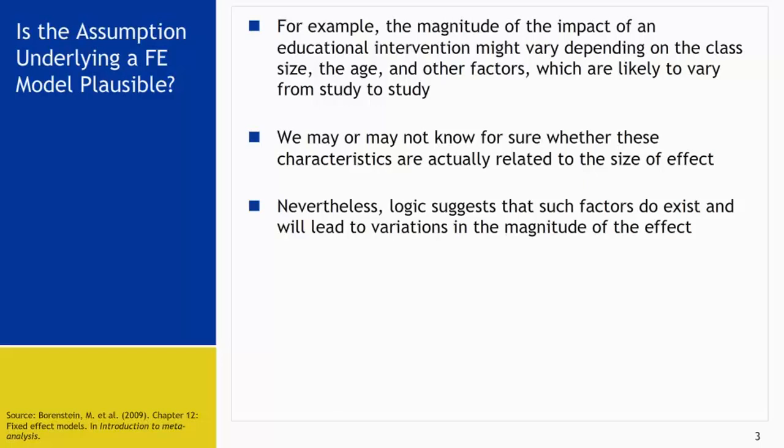Who on earth is going to do a study that is exactly the same as a study that has already been done? You may get two identical studies for drug trials submitted to a regulatory agency for approval. For a drug to be licensed in the United States, the drug company has to do two identical trials and submit the results to the FDA. In that case, you may get two identical studies.